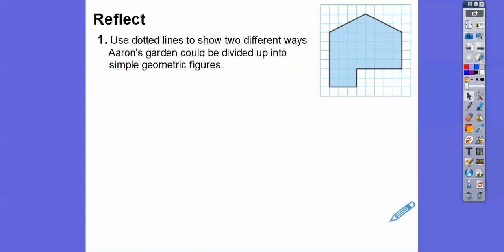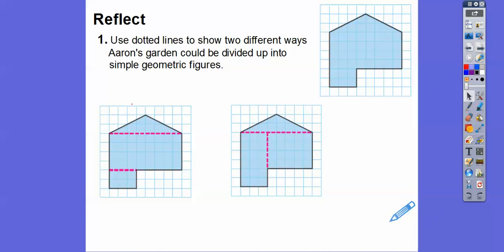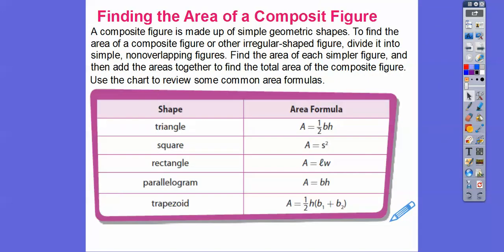So let's try to use dotted lines to show two different ways Aaron's garden could be divided up into simple geometric figures. Well, there's one, the one that we did right there. And then that one, we can do that one also. There are others. I don't want to show those to you yet. I don't want you to get overloaded. But there are other ways. And if you're getting the same answer, I tell my students you're doing it correctly.